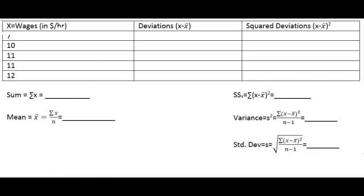Here is just a quick example on how to calculate the standard deviation. Suppose we have a sample of 5 workers. These 5 workers have hourly wages of $7 an hour, $10 an hour, $11, $11, and $12 an hour.